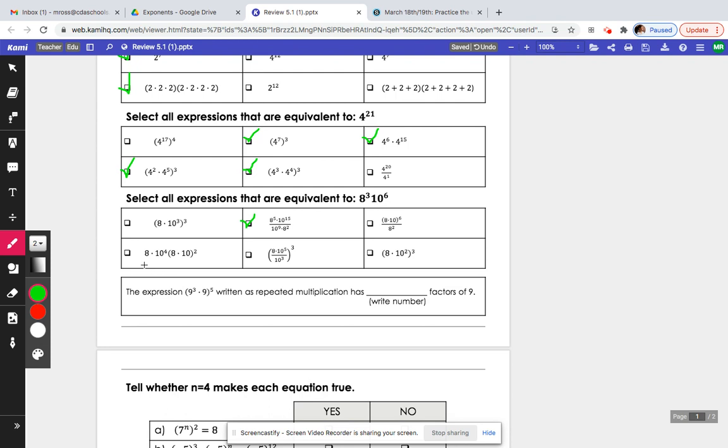This one here, we would actually multiply this 2 in, so you'd end up with 8 to the 2 and 10 to the 2. Well, 2 plus 1 is 3, so 8 to the third will become 8 to the third, and then 4 plus 2 is going to be 6, so this one does work.